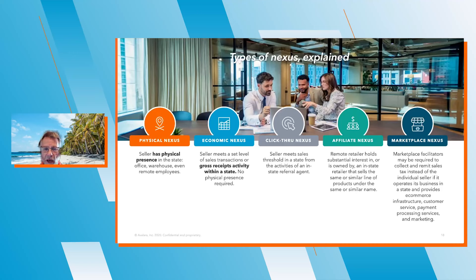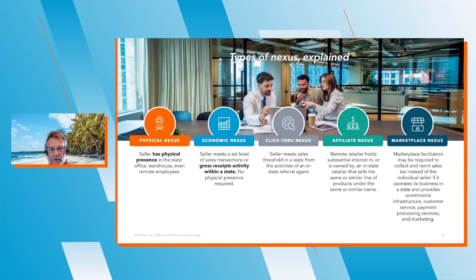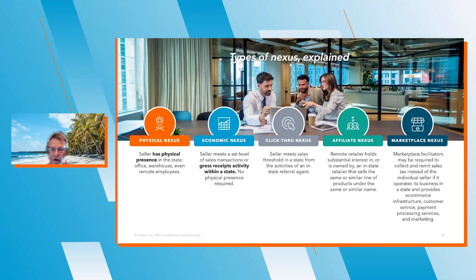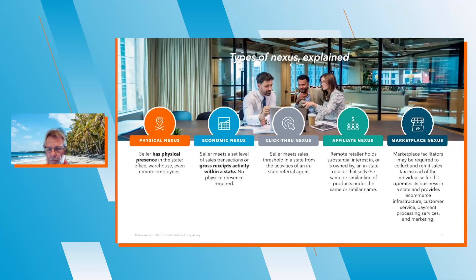The newer kind of nexus is economic nexus, where you basically meet a certain level of sales transaction — whether that's gross receipts or number of transactions within a state — and there's absolutely no physical presence required. Two other types that states used to impose nexus are click-through nexus, where the seller met a sales threshold from the activities of an in-state referral agent, and affiliate nexus, where the remote retailer holds some substantial interest in or is owned by an in-state retailer selling similar products.